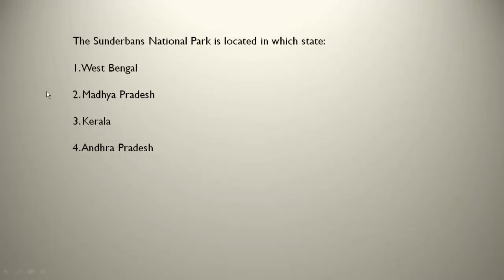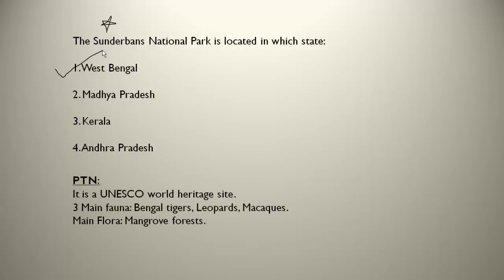The Sundarbans National Park is located in which state? This is again a very, very important question. It is located in West Bengal. It is also a UNESCO World Heritage Site. The three main fauna are Bengal tigers, leopards, and macaques — macaque is a breed of monkeys. The main flora is mangrove forest. Bengal tigers are very famous in West Bengal's Sundarbans.